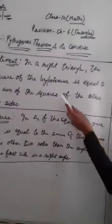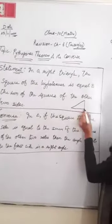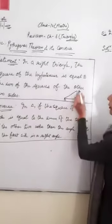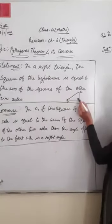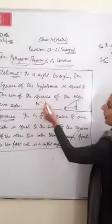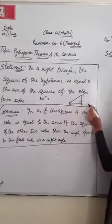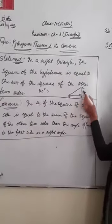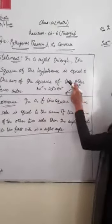The statement of the Pythagoras theorem, as you can see on the board: in a right triangle — whenever any triangle has one angle equal to 90 degrees, it is a right angle triangle — the square of the hypotenuse, which is the side opposite to the 90 degree angle, is equal to the sum of the squares of the other two sides. So BC² = AB² + AC², where angle A is 90 degrees.